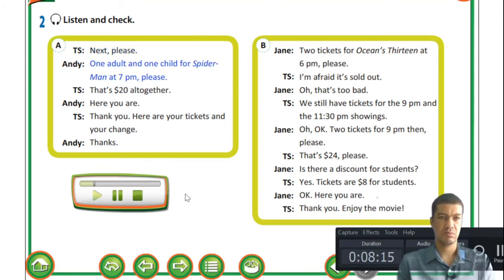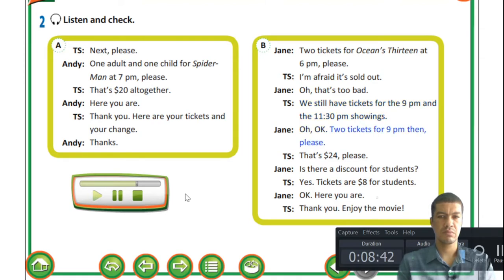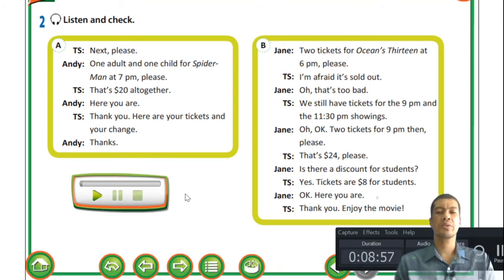Dialogue A: 'One adult and one child for Spider-Man at 7 pm please.' 'That's twenty dollars altogether.' 'Here you are.' 'Thank you. Here are your tickets and your change.' 'Thanks.' Dialogue B: 'Two tickets for Ocean's 13 at 6 pm please.' 'I'm afraid it's sold out.' 'Oh, that's too bad.' 'We still have tickets for the 9 pm and 11:30 pm showings.' 'Two tickets for 9 pm then please.' 'That's 24 dollars. Is there a discount for students?' 'Yes, tickets are eight dollars for students.' 'Enjoy the movie.'